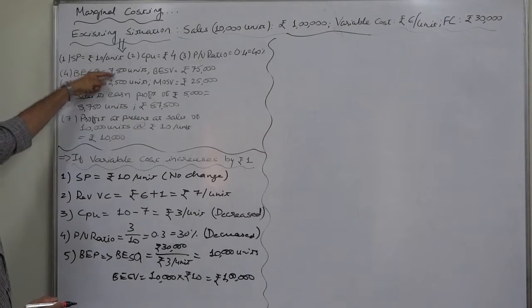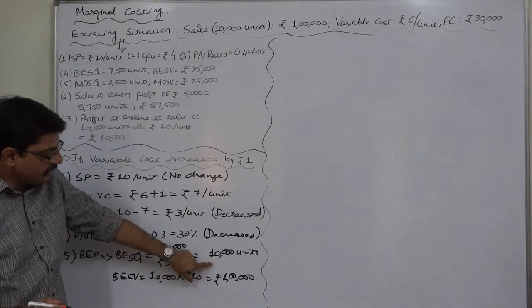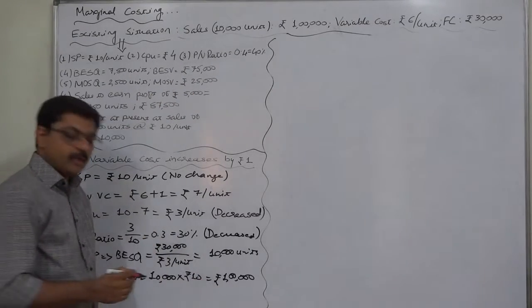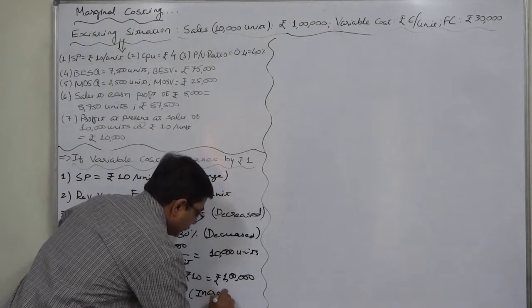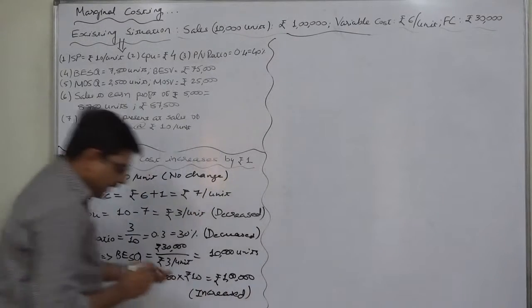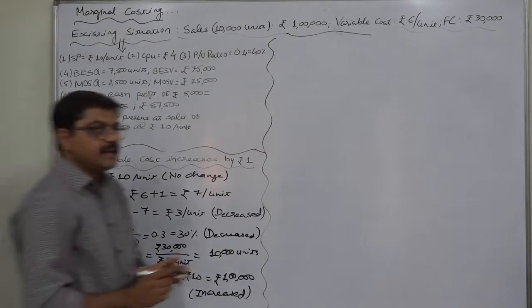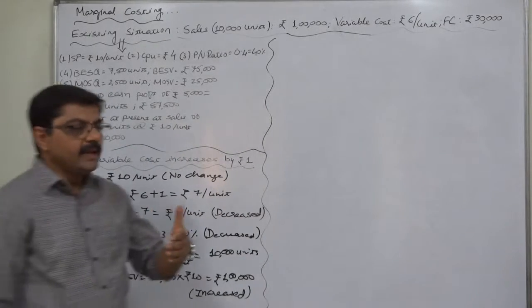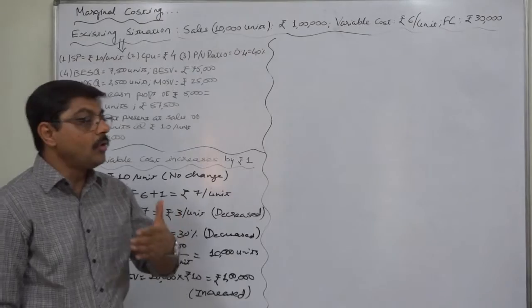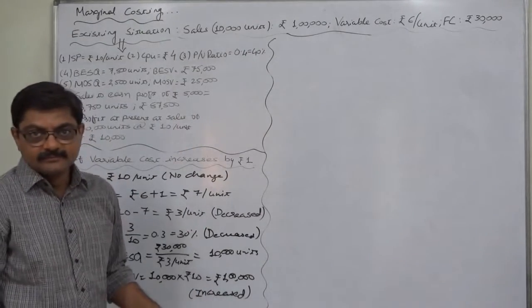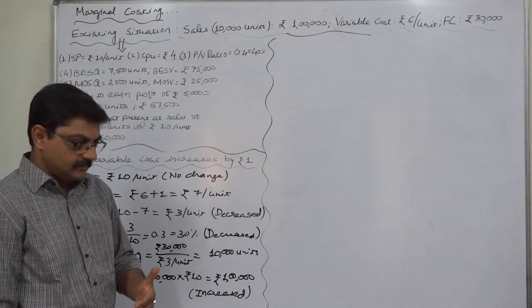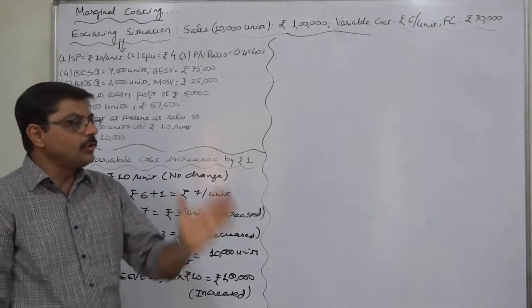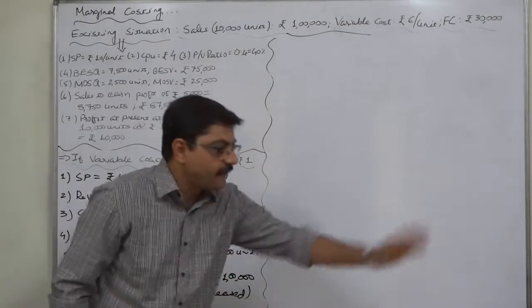the breakeven point has increased. 7,500 units, now it is 10,000 units. ₹75,000, now it is ₹1,00,000. So it has increased. Many times students confuse whether increasing BEP is good or bad for the firm. It is not good because the profit-making situation has gone far from your starting point. If we take the sales activity as a journey, the landmark or milestone of breakeven point has gone far from the existing place. Now, effect on margin of safety quantity: